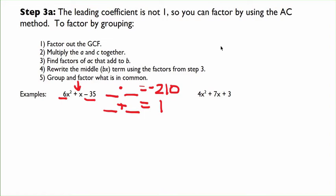So we need two numbers that multiply to negative 210 and add to one. Feel free to pause the video and do some trial and error to see if you can find the two values. But the two values that we'll use in this case are going to be 15 and negative 14, because 15 times negative 14 is negative 210, and 15 plus negative 14 is one.